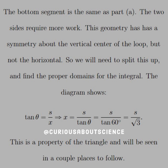In words: the bottom segment is the same as part A — nothing new there. The two sides at an angle require more work. The geometry has a symmetry about the vertical center of the loop but not horizontally. So we need to split this up and find the proper domains for the integral. The diagram shows that tangent of theta equals S over X; solving for X gives us that expression. This tells us where to integrate from and to with respect to the X direction.